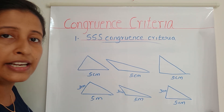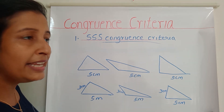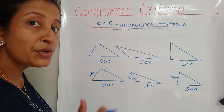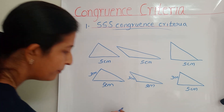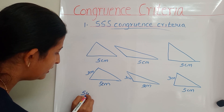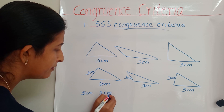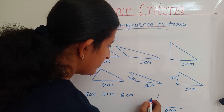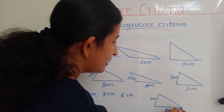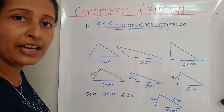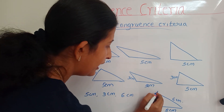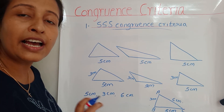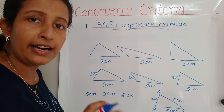Alan says this is not possible — he can't draw triangle ABC exactly as Anna wishes. He asks for one last clue. Anna says the length of the third side is 6 centimeters. So now with all three sides — 5 cm, 3 cm, and 6 cm — Alan gets one and only one unique triangle, the same triangle ABC that Anna drew.